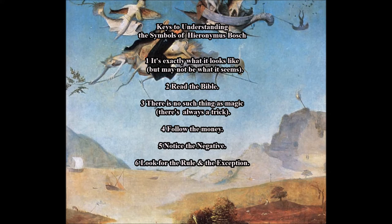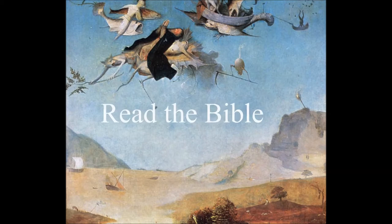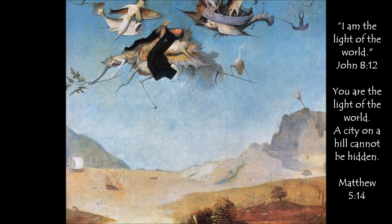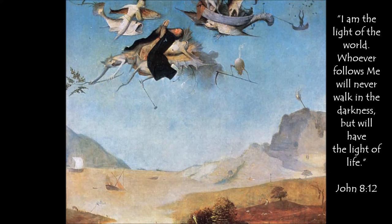It's exactly what it looks like: three ships in an ocean. Two are sinking. One is heading safely towards that beacon on the hill. We understand the beacon by reading the Bible — Jesus said, 'I am a light to the world. You are a light to the world.' Whenever you see a small light in a Bosch painting, especially one that seems to be there for no apparent reason, that light is an indicator of Jesus. So the ship at full sail is being guided by the light of Jesus.